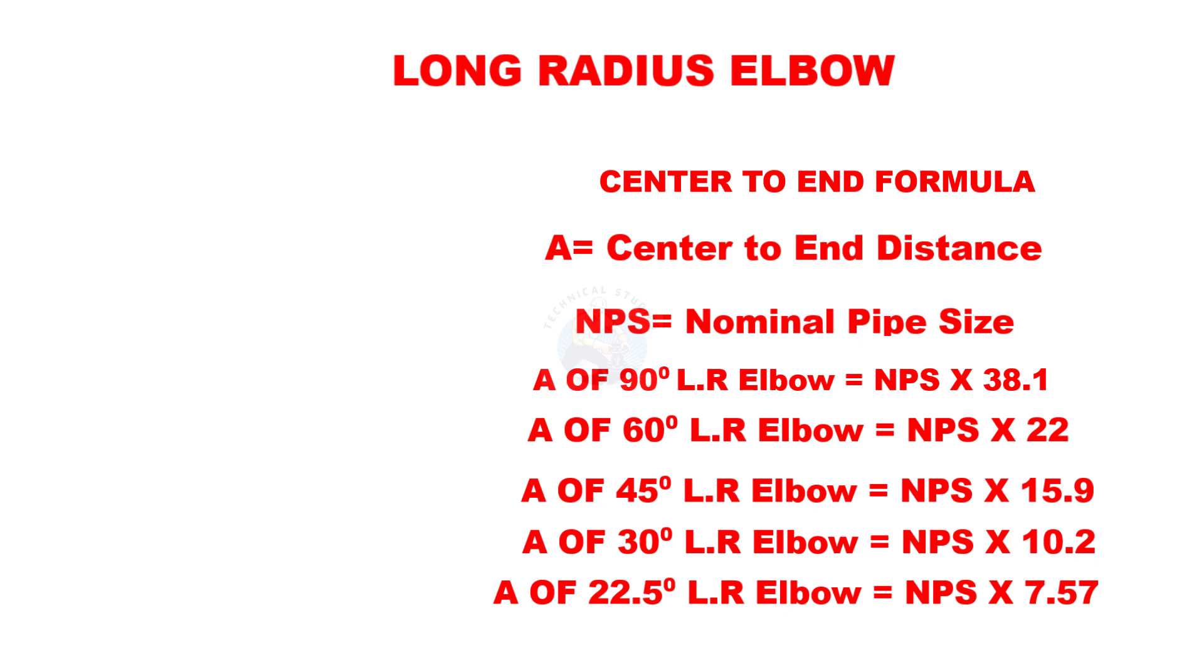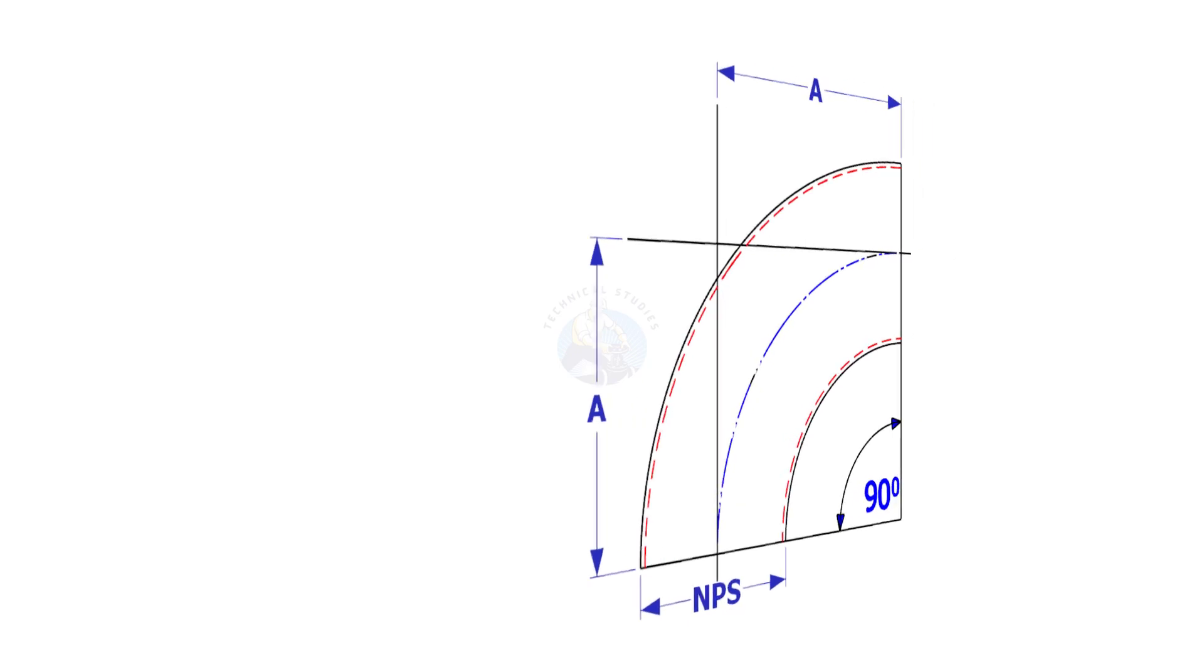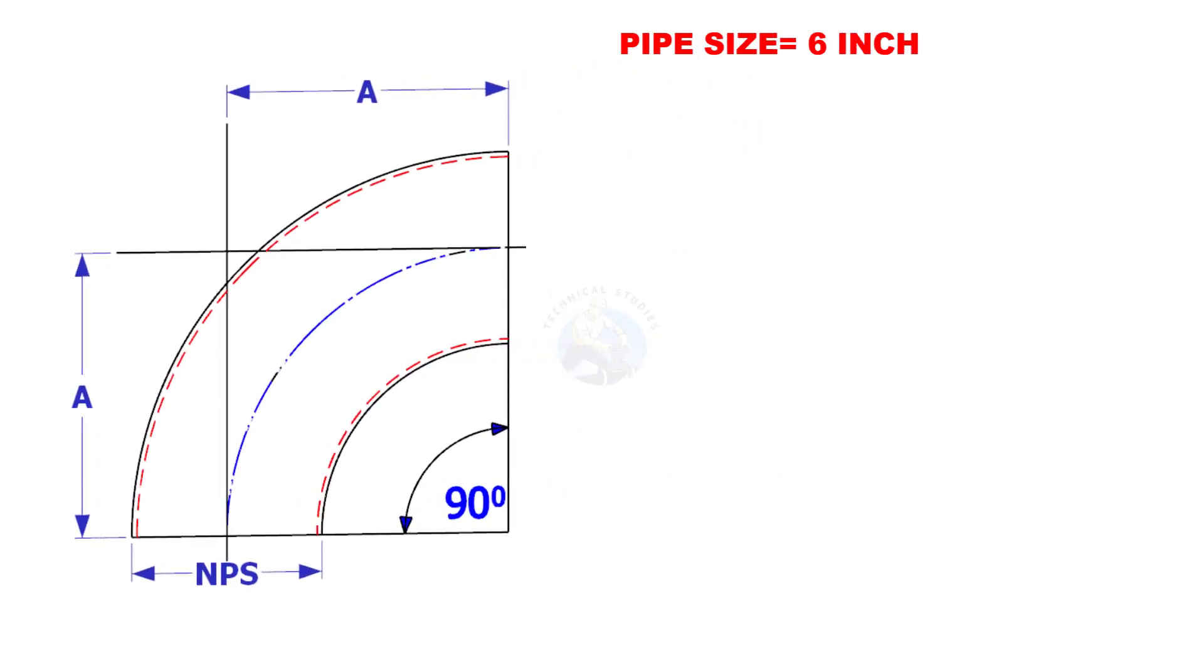Let us try some examples. Assume that the pipe size is 6 inches and the degree is 90. Multiply 6 by 38.1. The center to end distance of this elbow is 228.6 millimeters.